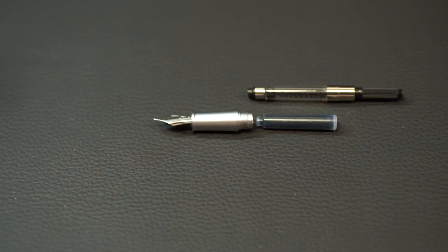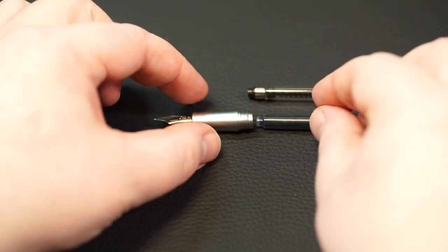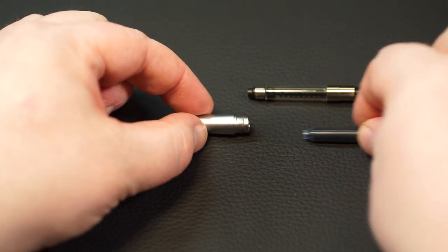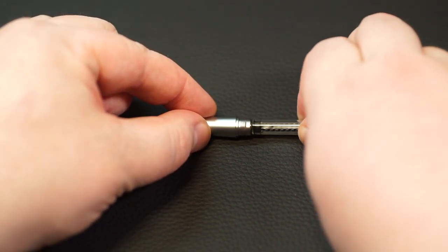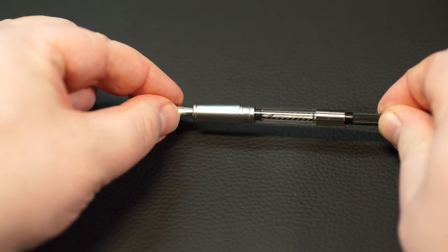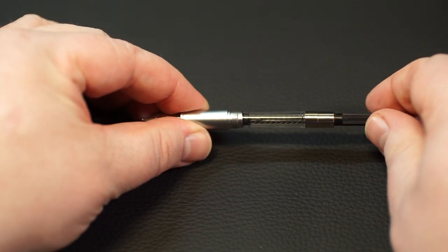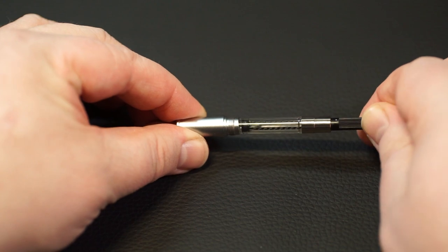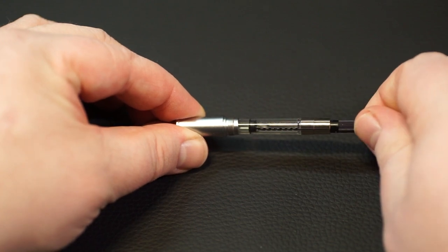To fill the fountain pen with an ink converter, it is advisable to first insert the ink converter into the fountain pen grip in place of a cartridge. The piston should have been turned all the way forward.